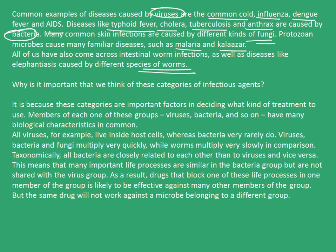Why is it important that we think of these categories of infectious agents? It is because these categories are important factors in deciding what kind of treatment to use. Members of each group — viruses, bacteria, and so on — have many biological characteristics in common. All viruses, for example, live inside host cells, whereas bacteria very rarely do so. Viruses, bacteria, and fungi multiply very quickly, while worms multiply very slowly in comparison.